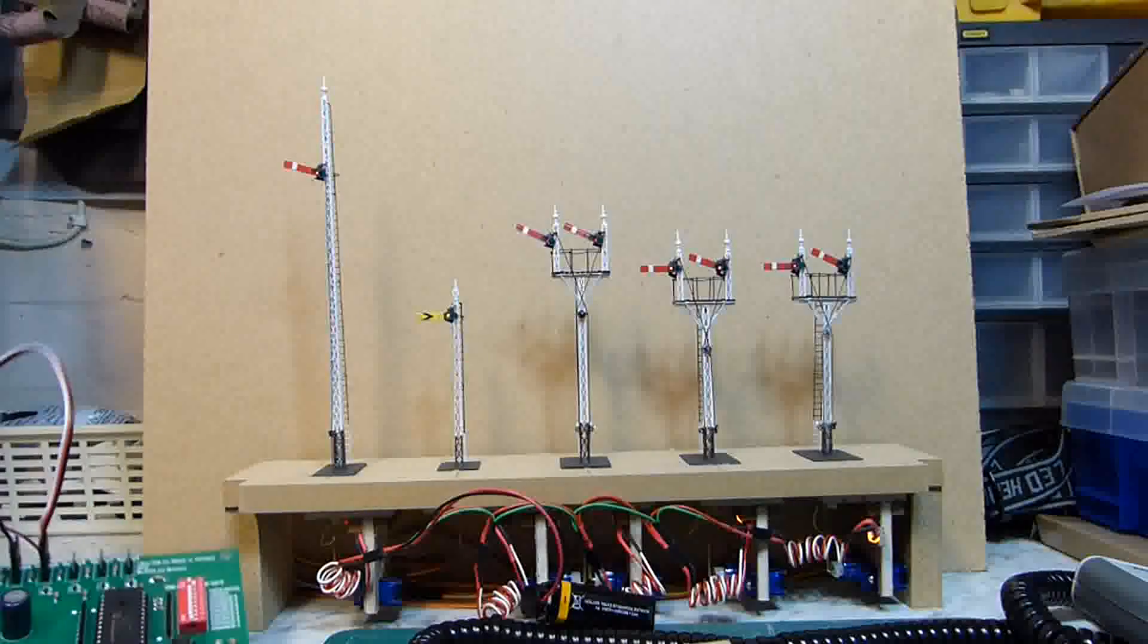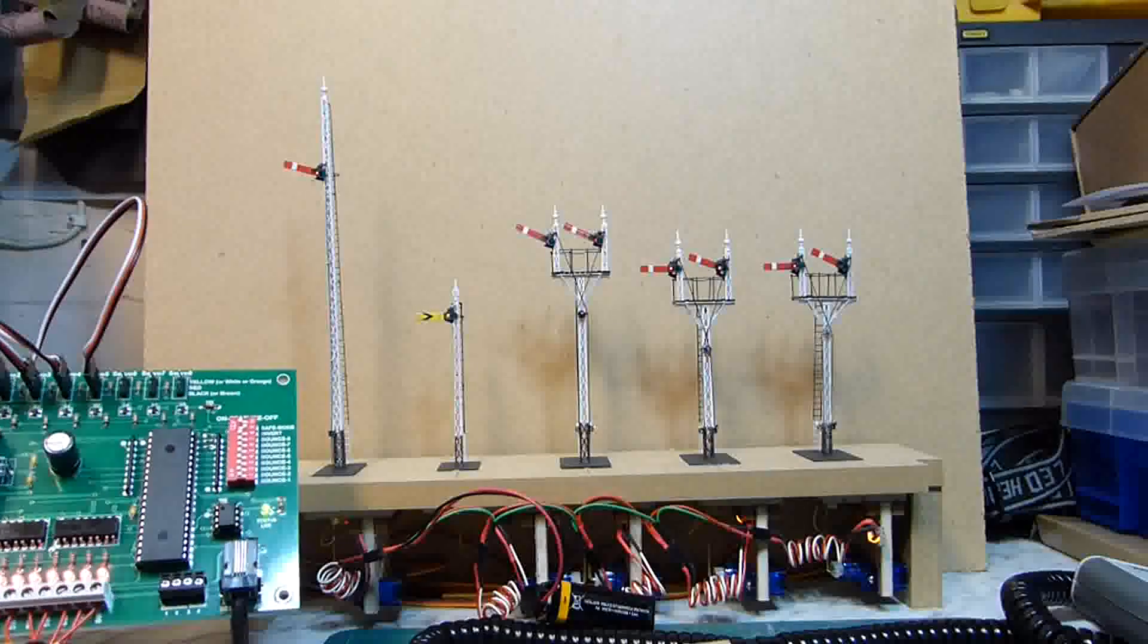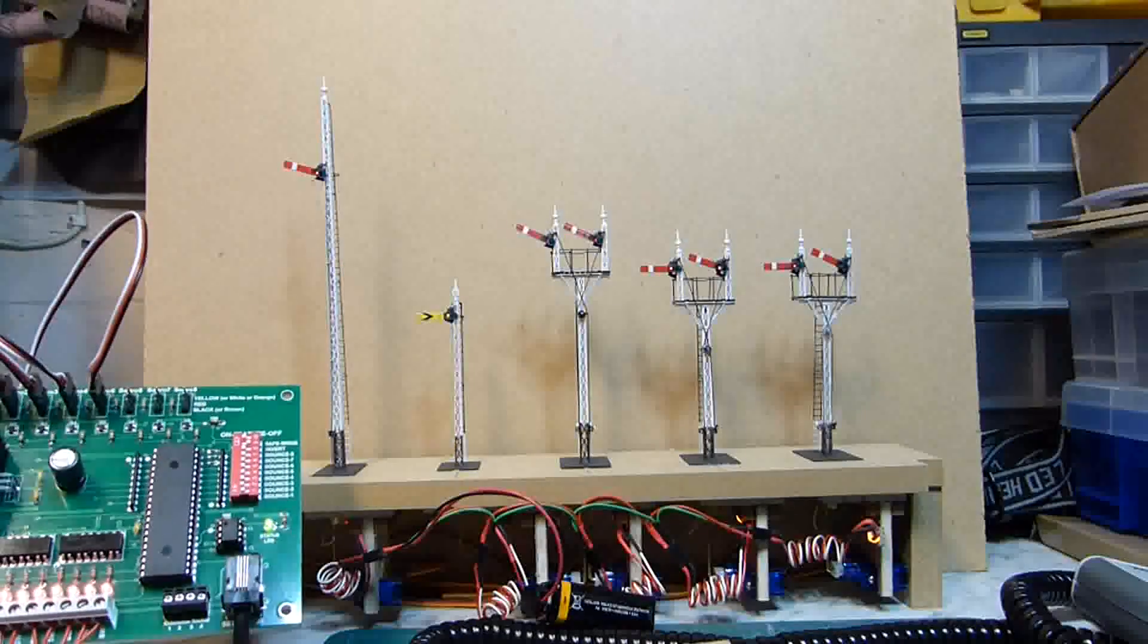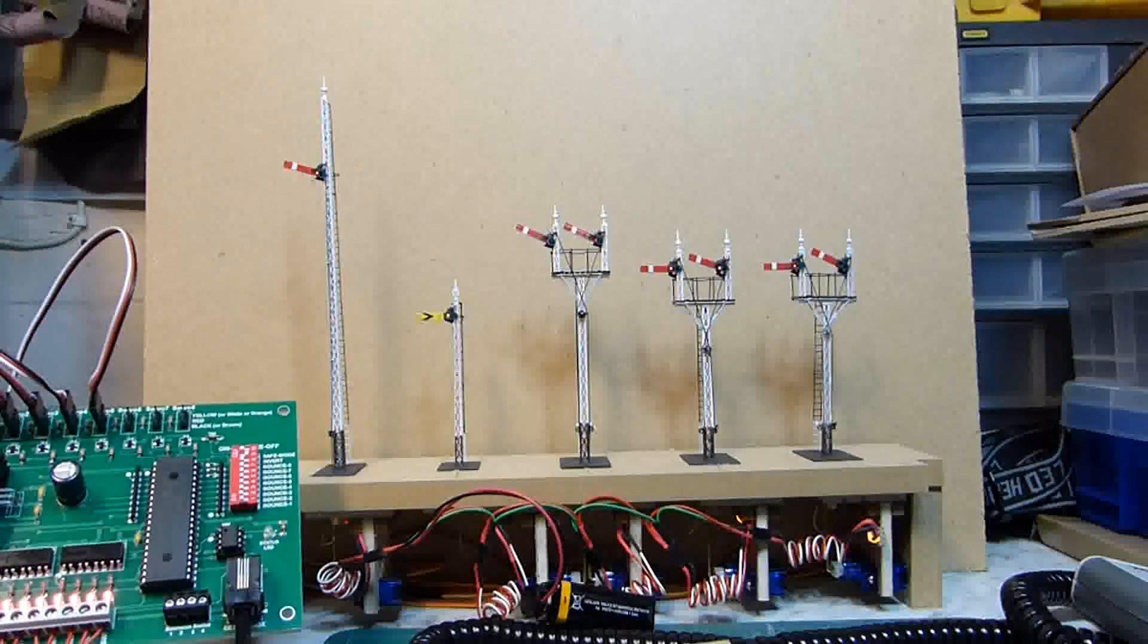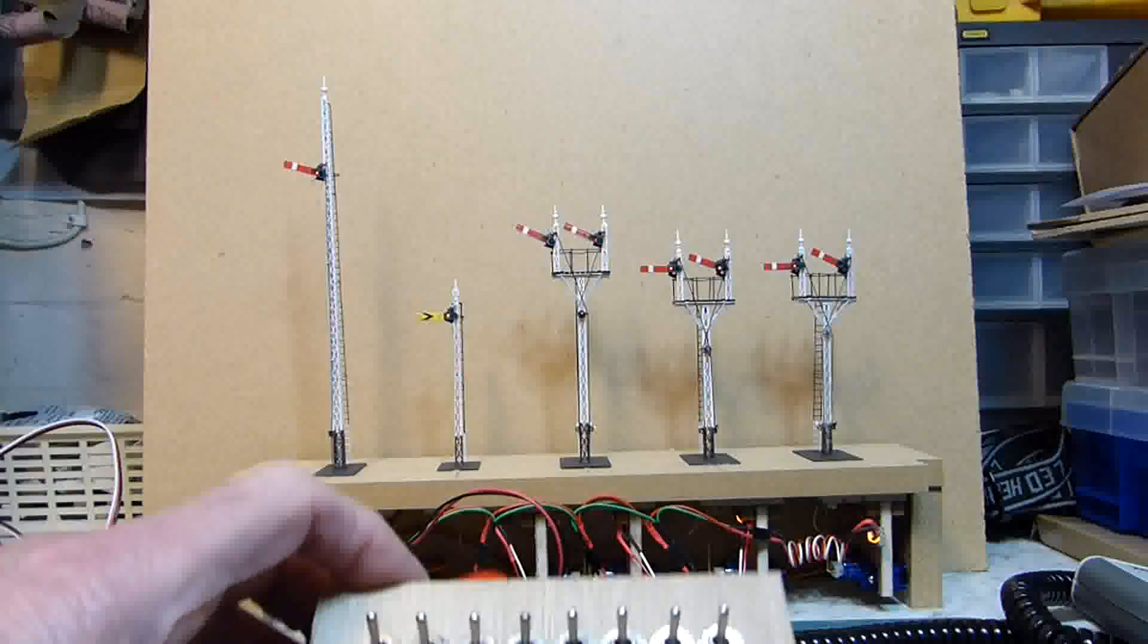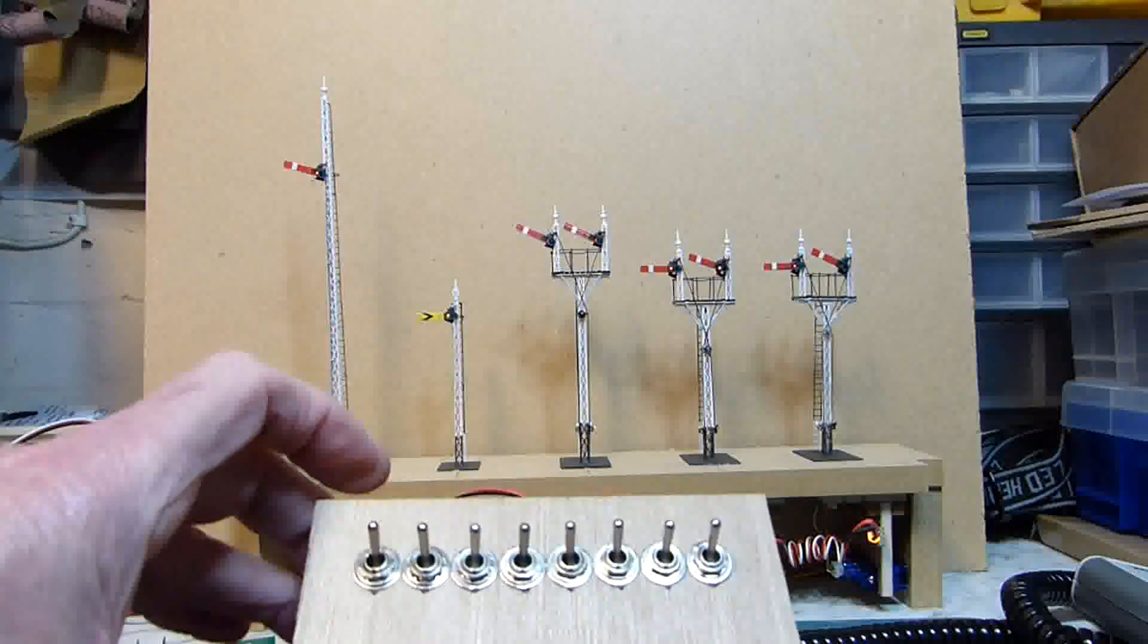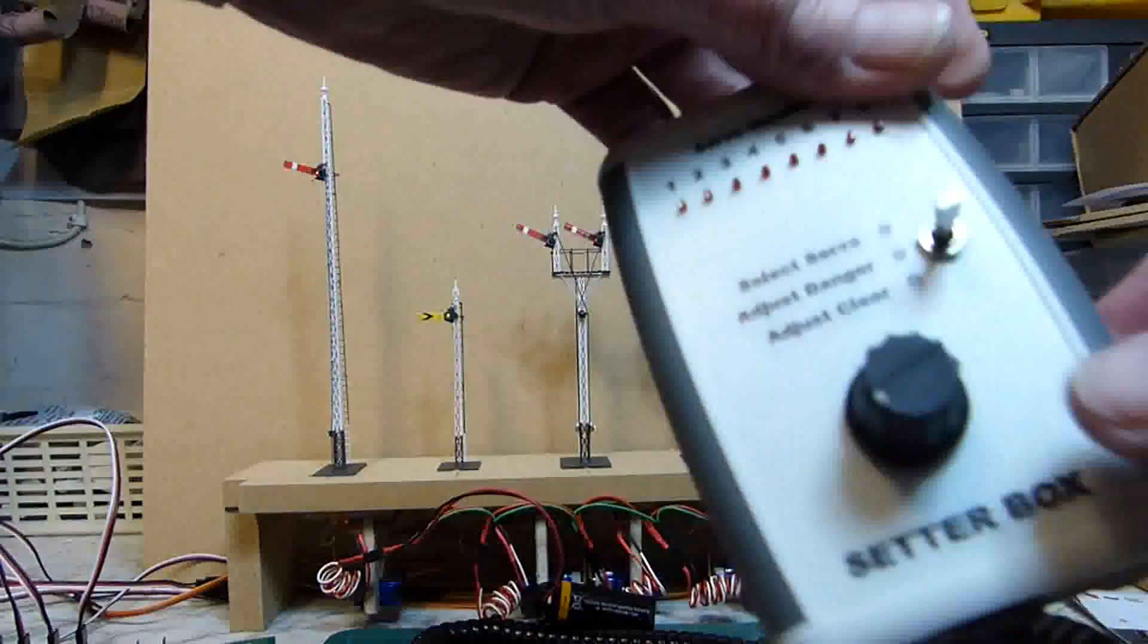The servo board from GF controls will control up to 8 servos. On these signals there are only five operating arms to bother about so there are only five servos connected. In operation we'll use on off switches to drive the servos and in the setting mode we use the setter box.